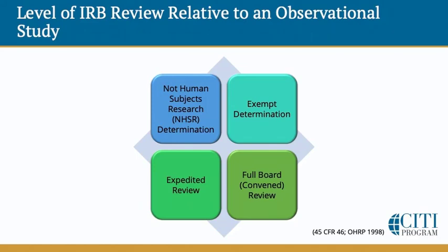The identification and disclosure of such behaviors raises additional concerns. When a study first presents to a human research protection program, the first order of business is to identify the appropriate level of review. Here you can see four options. With respect to option one, a not human subjects research determination: an activity is research not involving human subjects if there is no interaction or intervention with living individuals and neither the provider of the specimens or data nor the recipient can link the specimens or data with identifiable information — individuals either living or dead. An observational study involving a fully de-identified, publicly available dataset with no investigator access to identifiers could conceivably be considered not human subjects research.